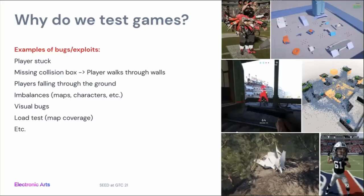First, to set the scene for those not familiar with game testing — why do we even test games? In this talk I'm focused on logical glitches, for example a player getting stuck, missing collision boxes causing players to walk through walls, players falling through the ground, imbalances in games or characters, and also visual bugs and load tests, for example where you have to test map garbage. You can see some visualizations of these examples to the right.